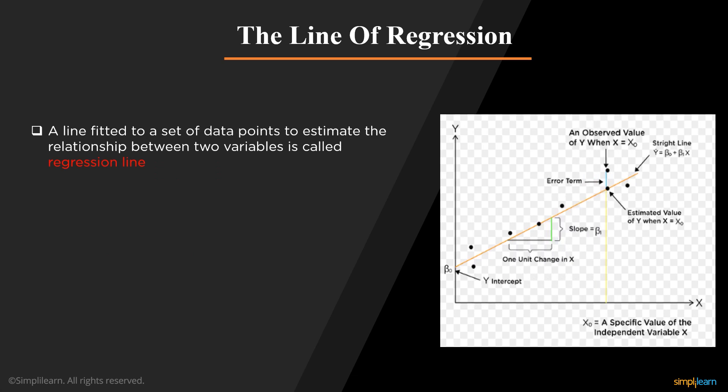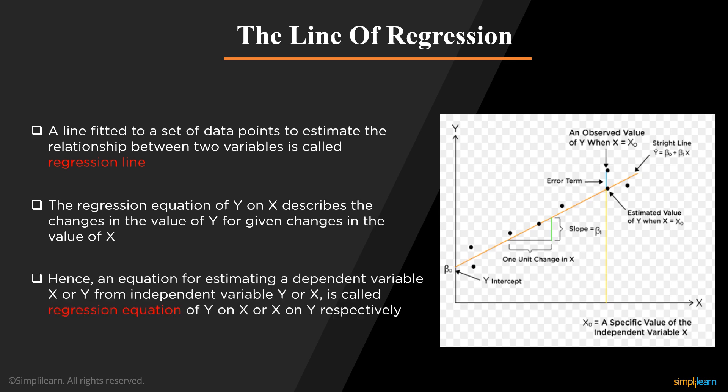The line of regression. The regression line is a line which is used to describe the behavior of a set of data. In other words, it gives the best trend of the given data. Regression lines are useful in forecasting procedures. Its purpose is to describe the interrelationship between the dependent variable and independent variable. The regression equation of y and x describes the change in the value of y for given changes in the value of x and vice versa. In the regression line equation, x and y are the variables of interest in our data with y the unknown or dependent variable and x the known or the independent variable.